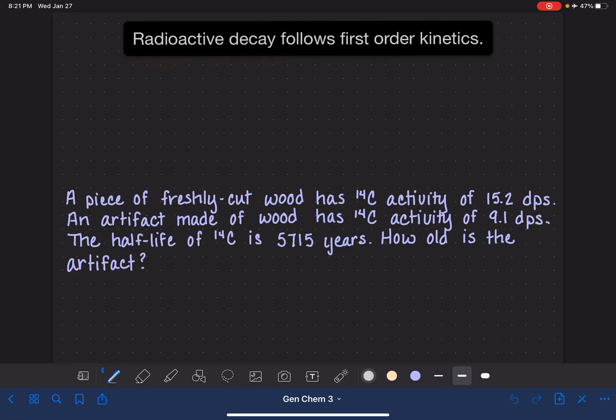Radioactive decay is a process where an unstable atom undergoes spontaneous emission of some sort of subatomic particle to create a stable or a more stable atom.